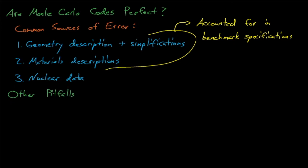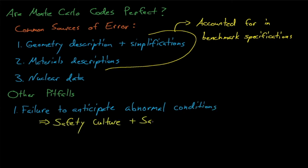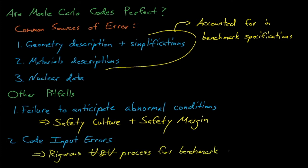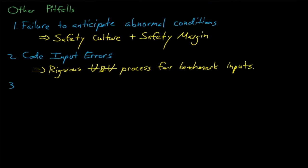Other possible pitfalls for our Monte Carlo codes include failure to anticipate abnormal conditions, which should not be a concern if we have a healthy safety culture and design our operations with adequate safety margin. Number two, having errors in our Monte Carlo code's inputs, which in practice is usually not a concern since criticality safety integral benchmark models usually undergo a rigorous V&V process at each site.